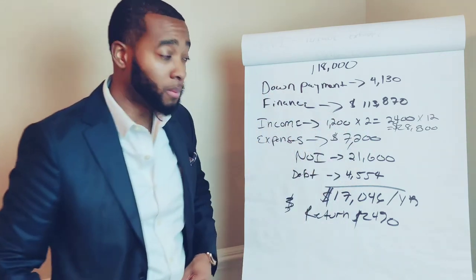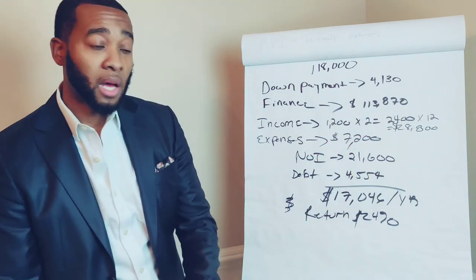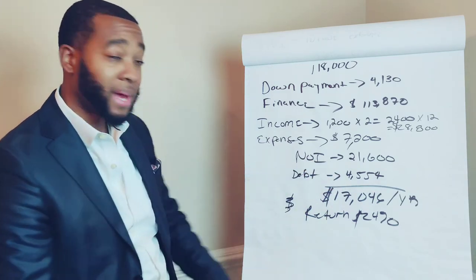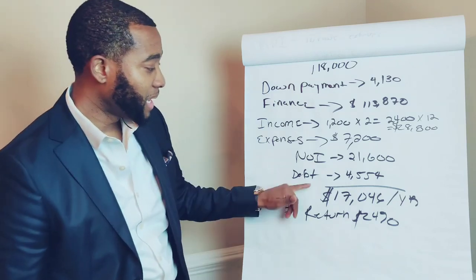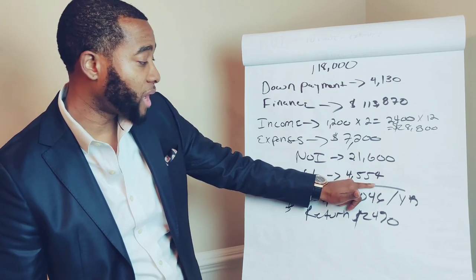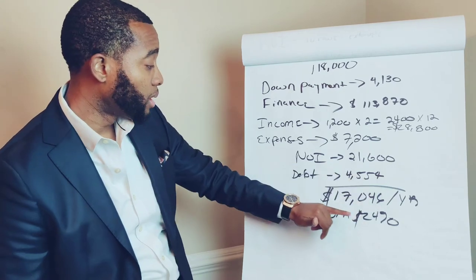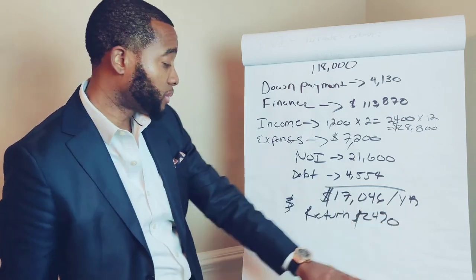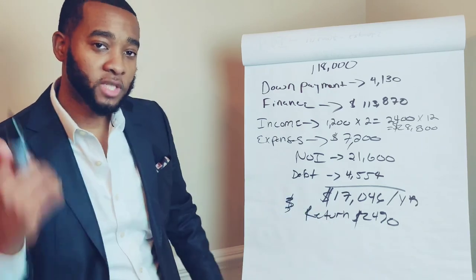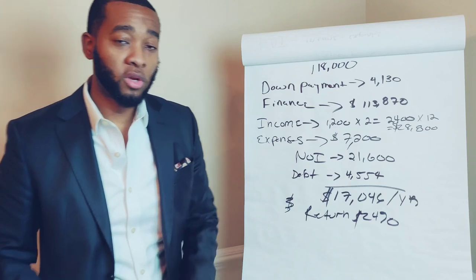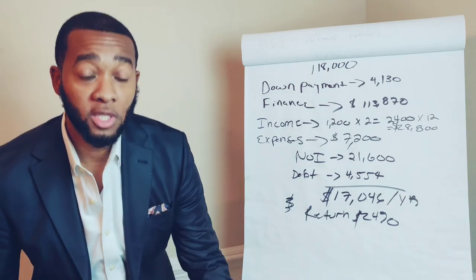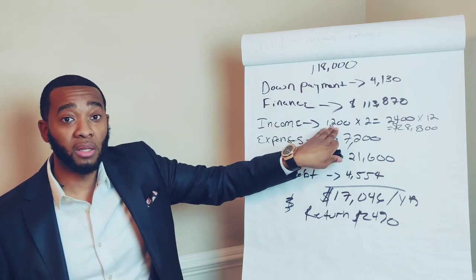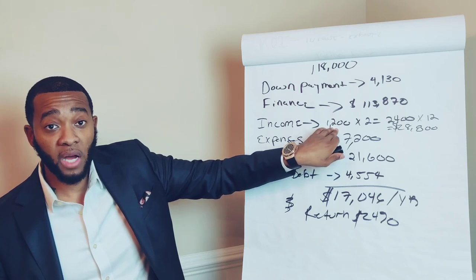To recap: you finance $113,870, your income is $1,200 times two if you have two tenants paying $1,200 a month. You make about $28,800 in income, minus $7,200 in expenses, giving you an NOI of $21,600. Your debt payment on the $113,870 is around $4,500 per year, leaving you with $17,000 per year. That's a twenty-four percent return. And keep in mind — do you think rent is going to stay at $1,200 in the next three to five years, or is it going to be higher?